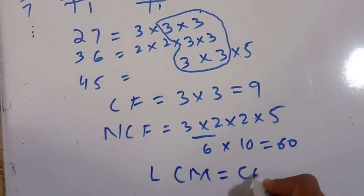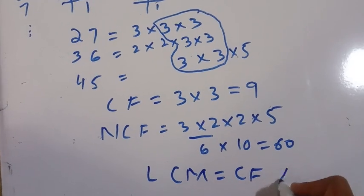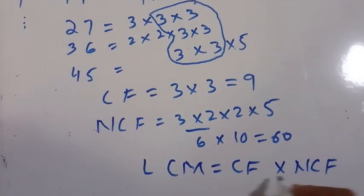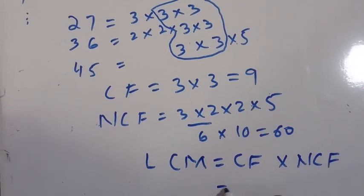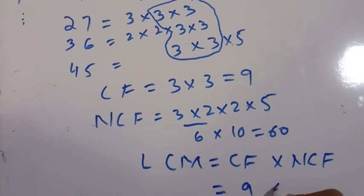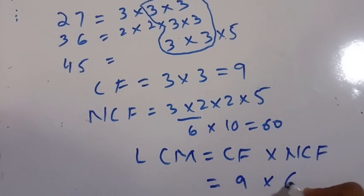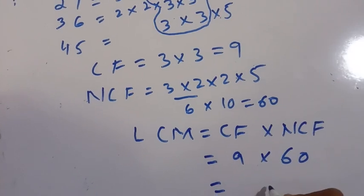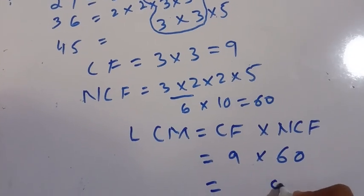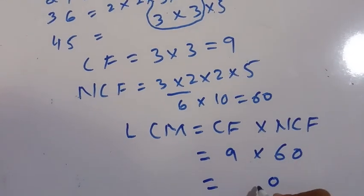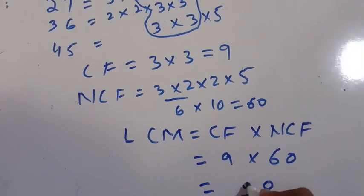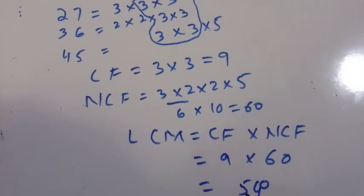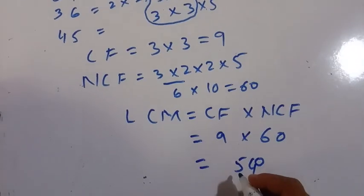The LCM is calculated as the common factor multiplied by the non-common factors. The common factor is 9 and the non-common factor is 60. So 9 × 60 = 540. Therefore, the LCM is equal to 540.